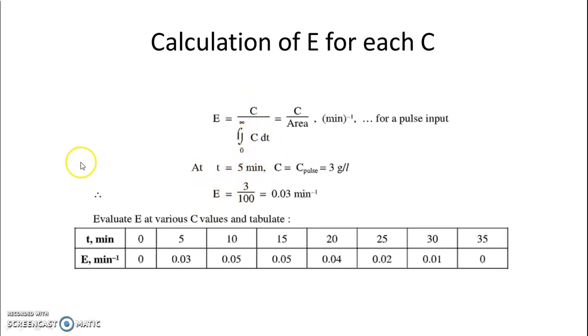If you check the data, T is 5, then C is 3. So what is the E value corresponding to it? It is 3 upon 100 because your CT is 100. Total concentration of the effluent is 100. In this way, you can tabulate all the values of E.